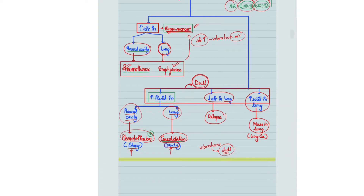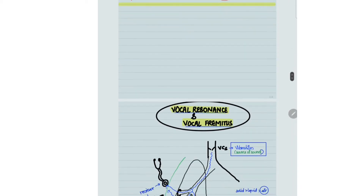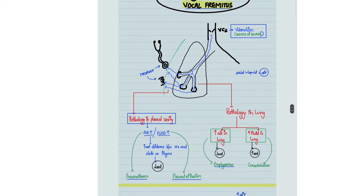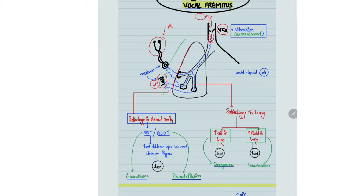Now we will discuss vocal resonance and vocal fremitus. Whenever a person speaks, the vocal cords vibrate. Normally, vibration waves go up and are articulated by the oral cavity. Similarly, sound waves travel down through the trachea into the alveoli, onto the lung surface, and then to the chest wall. If we auscultate these sound waves, it is vocal resonance; if we palpate them, it is vocal fremitus.